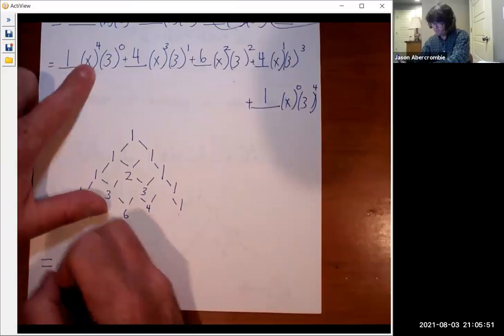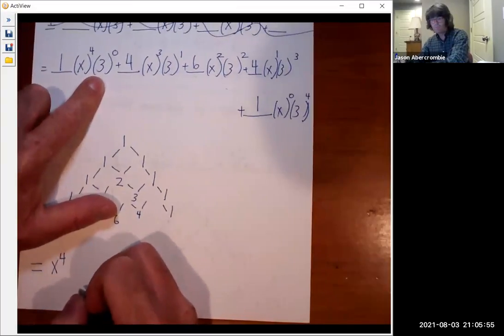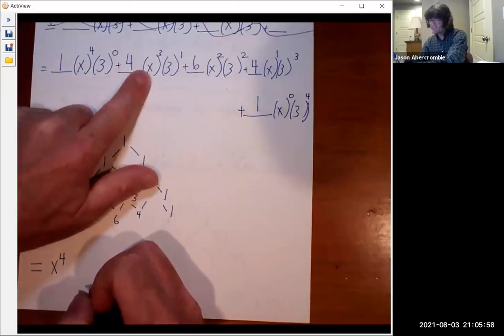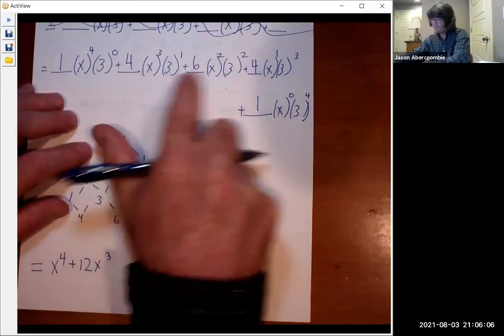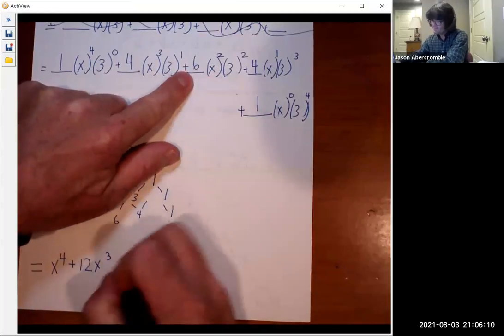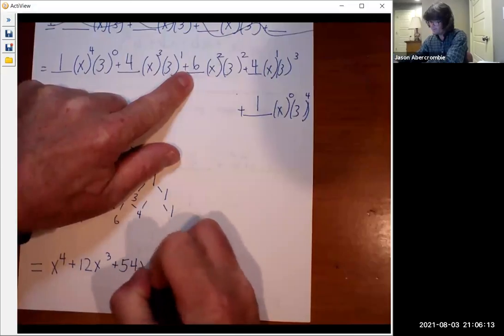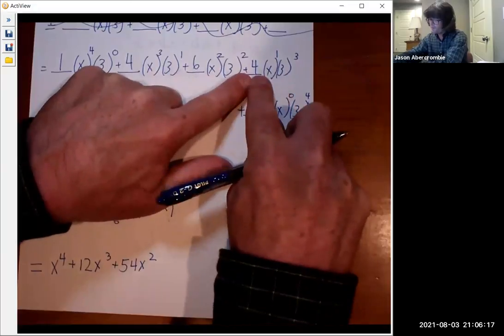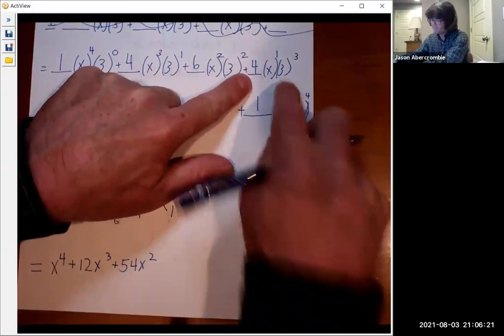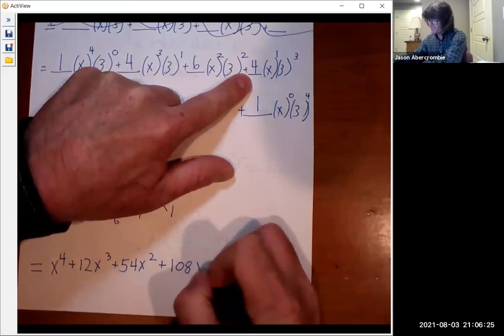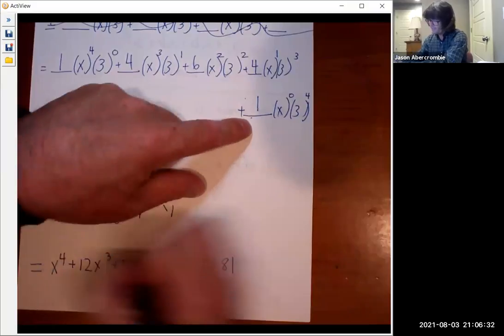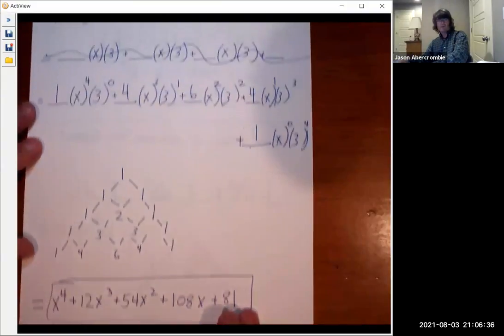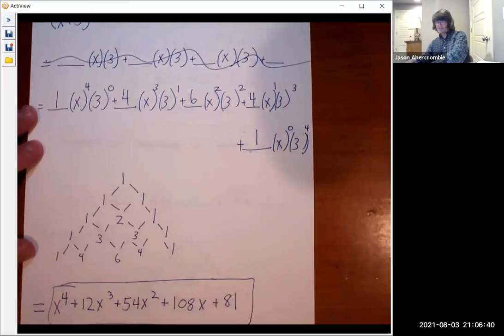So this is going to be 1·x⁴, because 3⁰ is just one. And then this is going to be 4x³ times 3, 4 times 3 makes 12. That's 12x³ right there. And then this is 6 times x² times 9. So that's 54x². And then this one is 4 times x times 3³. That's 27. 27 times 4 makes 108. And it's just x¹. And then finally 1·x⁰ is 1, 3⁴ is 81. So binomial theorem gives you what this guy multiplies out to be. It is that kind of long, tedious looking polynomial. And so that makes it doable.